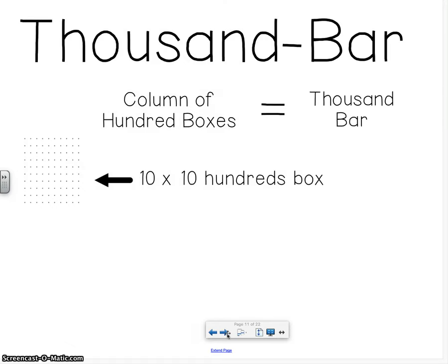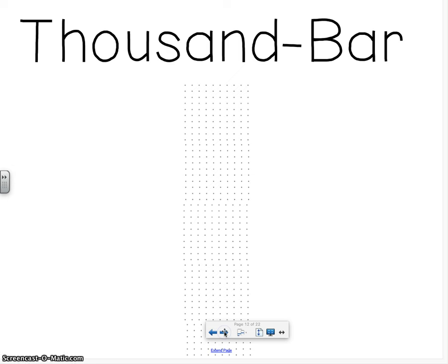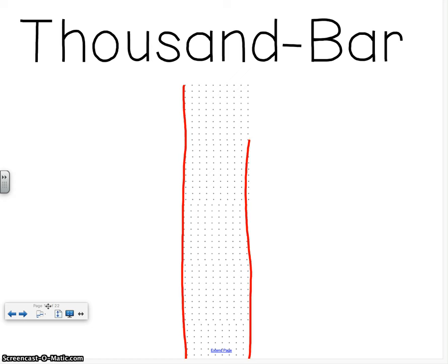There's one more thing that you might need to know for your independent work today, and that's the thousands bar. It's called a thousands bar because it's a column of hundred boxes. So you see that this is a 10 by 10 box right here. And we're going to make a column of them. That means we're going to stack them right on top of each other. And that's going to look like this. That represents a thousand, or sorry, one thousand. So if you had 2,000, then you would need to draw two of those thousand bars.